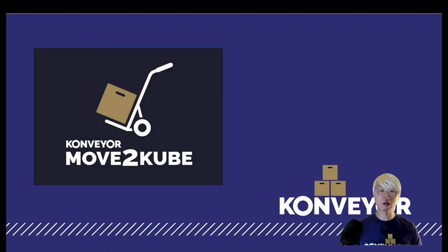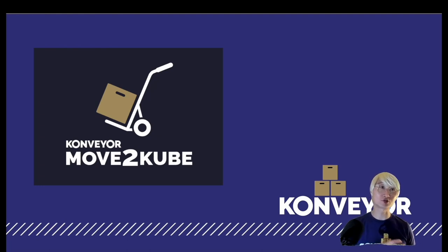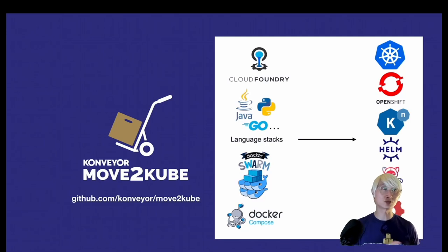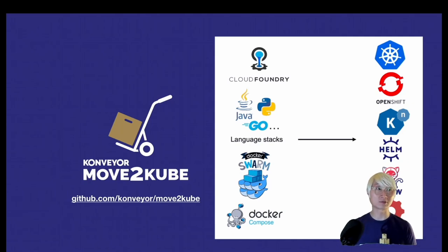Today, as our session title indicates — re-platforming from Cloud Foundry to Kubernetes — we'll focus on moving workloads to Kubernetes. You can go to the GitHub repository under Konveyor Move2Kube, where you can find multiple source-to-target options. For example, you can re-platform from Cloud Foundry to Kubernetes or Red Hat OpenShift — not only normal workloads but also serverless, or advanced strategies using Helm charts.